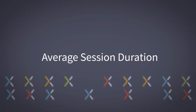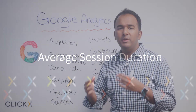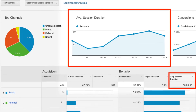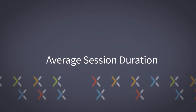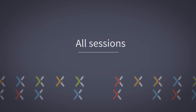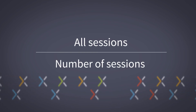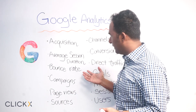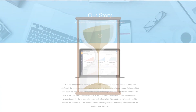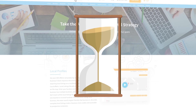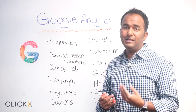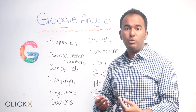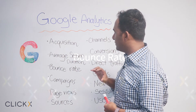Average session duration is really the measurement of the time visitors spend on your website. It's calculated by taking all the sessions, dividing by the number of sessions you have — all the time people are spending divided by the number of people — and then you get the average session duration. If you're trying to increase the amount of time people spend on your website, you need to look at average session duration. Maybe they're only spending 10 seconds, maybe 20 minutes, and that might be really good for your industry.